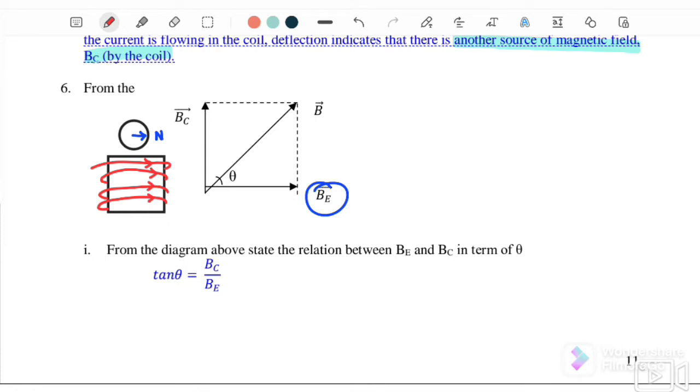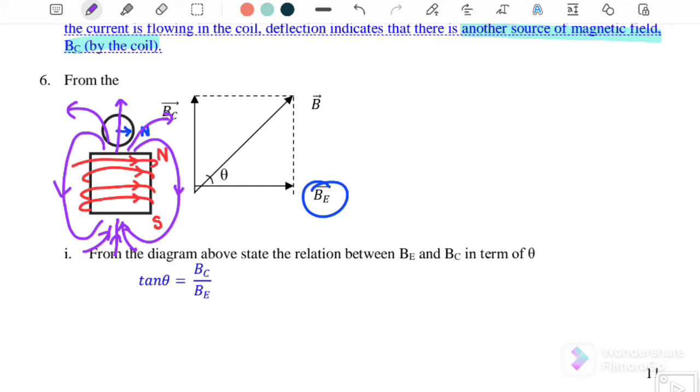When the current is flowing through, this solenoid will become an electromagnet. This will be the north pole, this one will be the south pole. Therefore, it will produce a magnetic field which comes out from the north and enters the south.